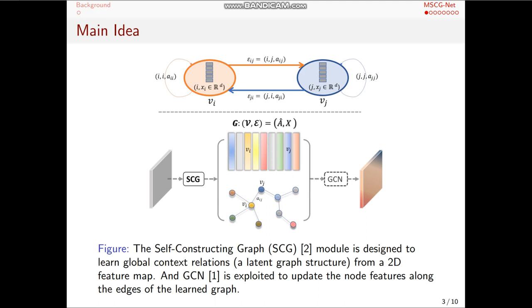So to address these issues mentioned above, we proposed a novel model structure, namely the self-constructing graph module, SCG module. It's designed to learn global context relations directly from a 2D feature map.